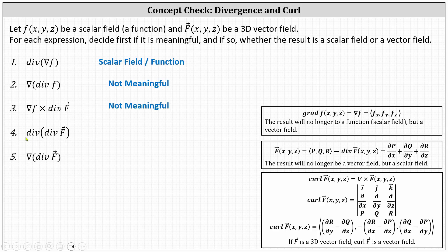Number four: we begin with the divergence of the vector field F, which results in a scalar field or function, and then we want to find the divergence of that scalar field, which we cannot do — we only find the divergence of a vector field. Number four is not meaningful.